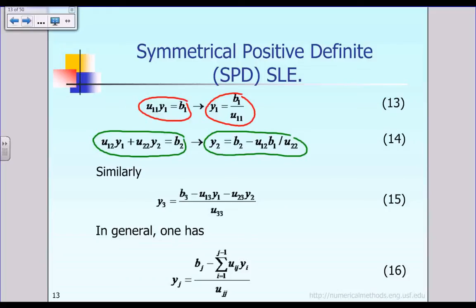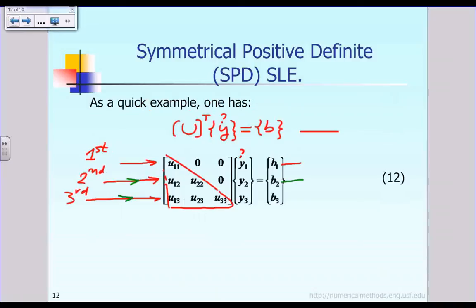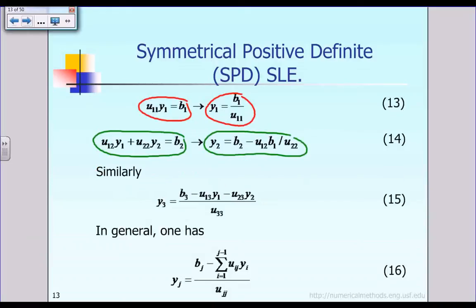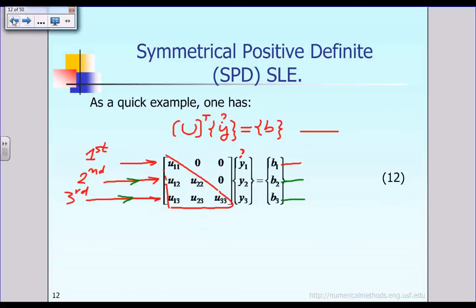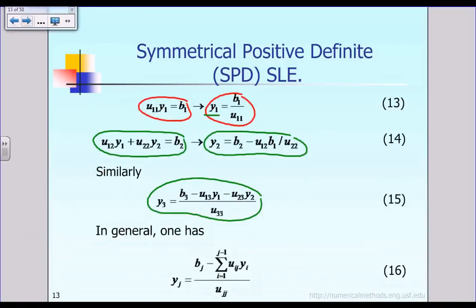Finally, looking at the third equation: u13 times y1 plus u23 times y2 plus u33 times y3 equals b3. That third equation gives us equation 15, from which we solve for y3. This step is called the forward solution — step number two — because we solve in order: y1 first, then y2, then y3.